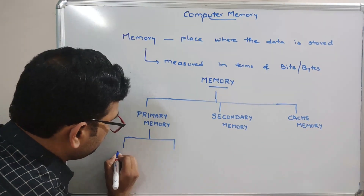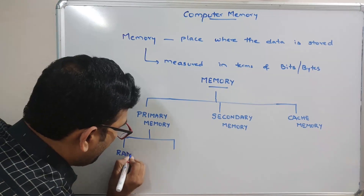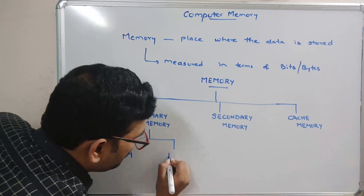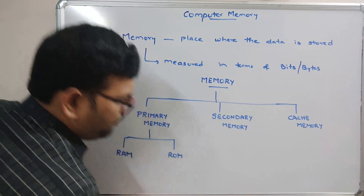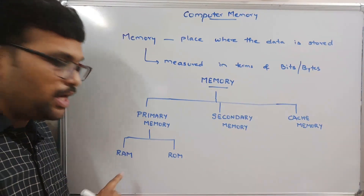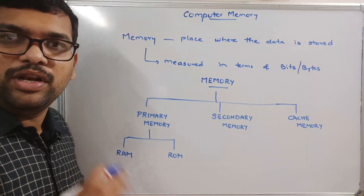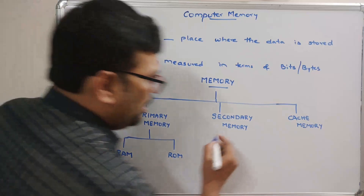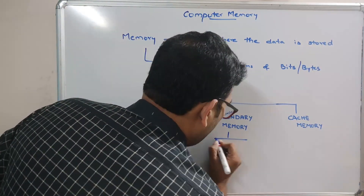RAM stands for Random Access Memory and ROM stands for Read-Only Memory. Secondary memory is also divided into several types.